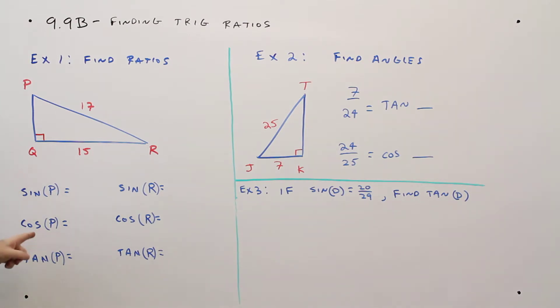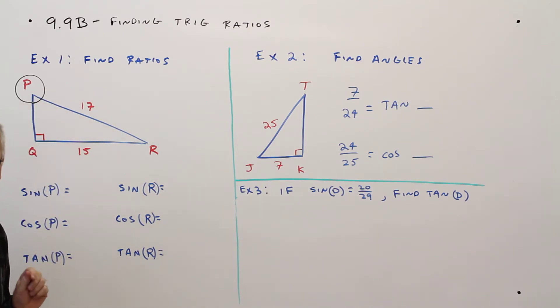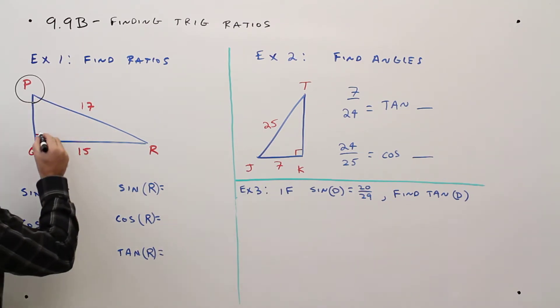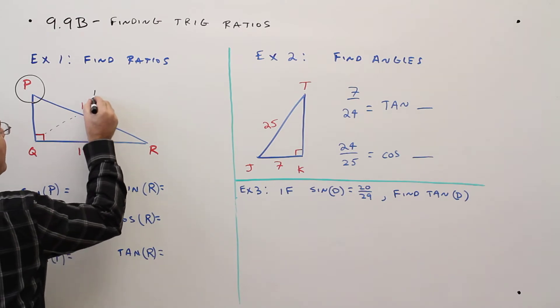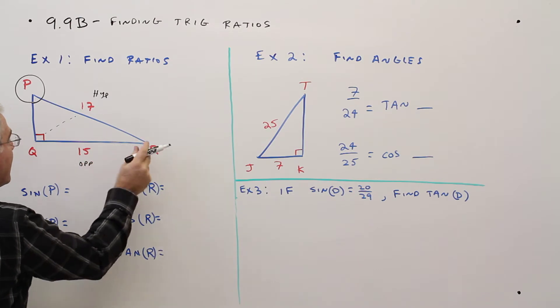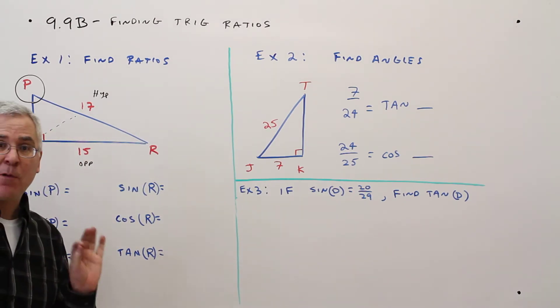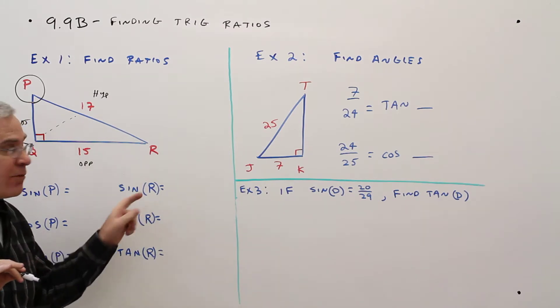find the ratios in this triangle. So I've got to find sine, cosine, and tangent of angle P, and sine, cosine, and tangent of angle R. I'll do them one at a time. So for angle P, what I'm going to do is circle that as my reference angle, and then label. Always opposite the right angle is the hypotenuse, opposite the reference angle is the opposite, and the other one will be called the adjacent. You might want to do this in pencil so you can erase and do the other ones.